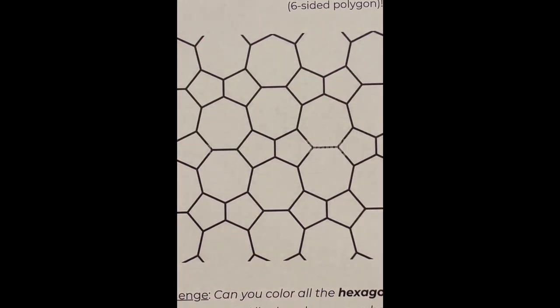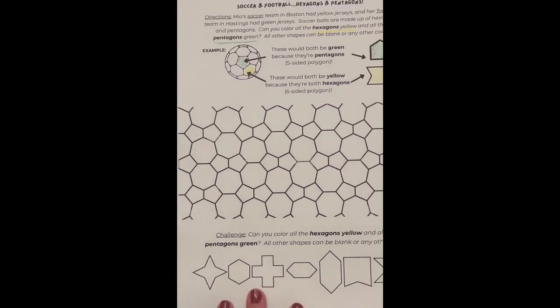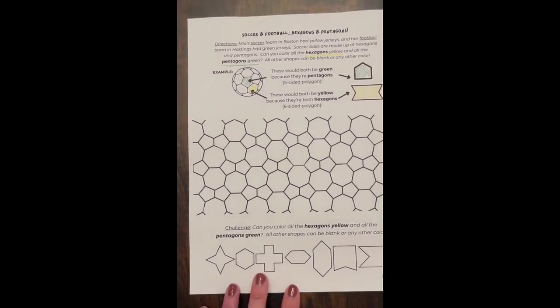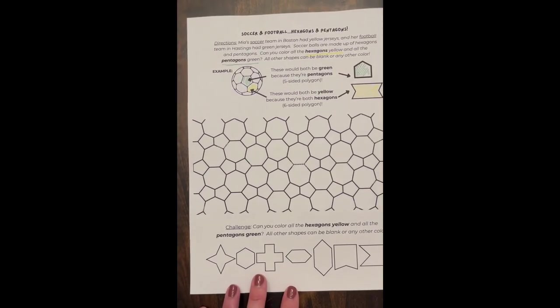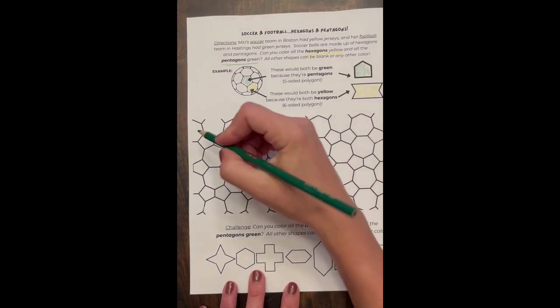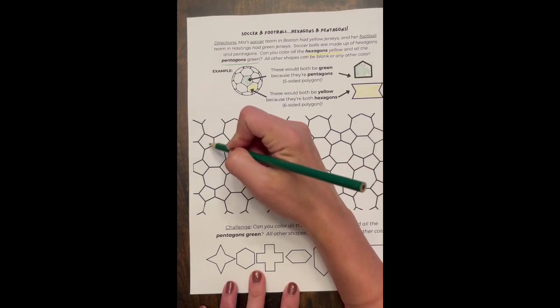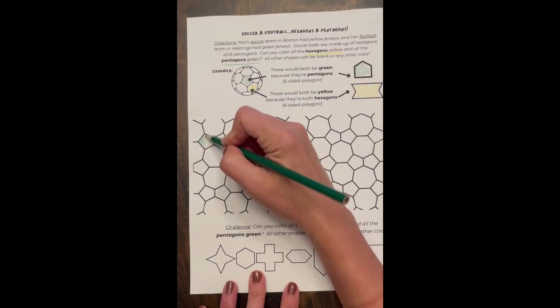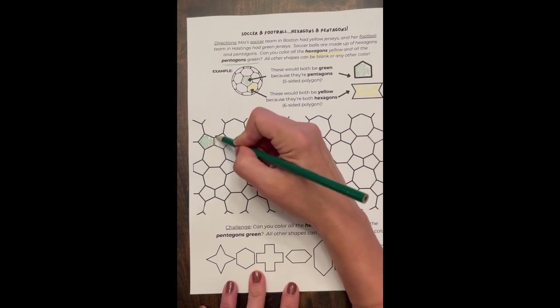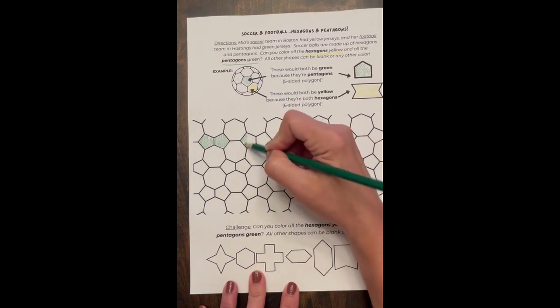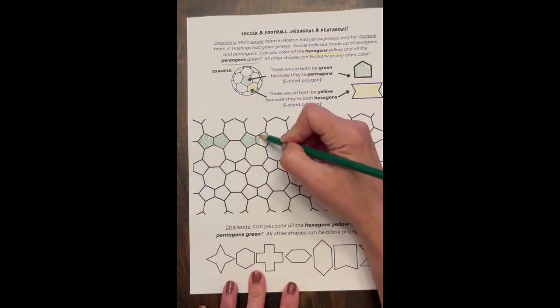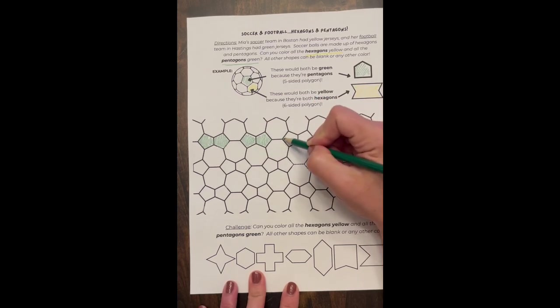So in this whole entire section you don't have a single hexagon. All you're going to do in this one is find one, two, three, four, five, all of these pentagons. So you're actually going to have a lot that are either blank or they're a different color if you decide to do another color.